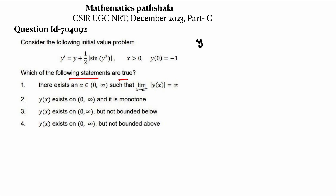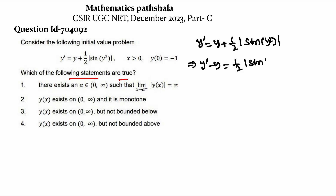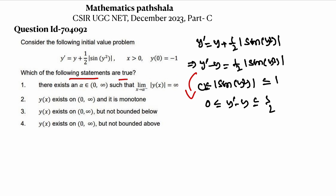We have y' = y + (1/2)|sin(y²)|, which can be written as y' - y = (1/2)|sin(y²)|. Now, we know that |sin(y²)| is between 0 and 1, so from this we can write: 0 ≤ y' - y ≤ 1/2, because (1/2)|sin(y²)| ≤ 1/2.